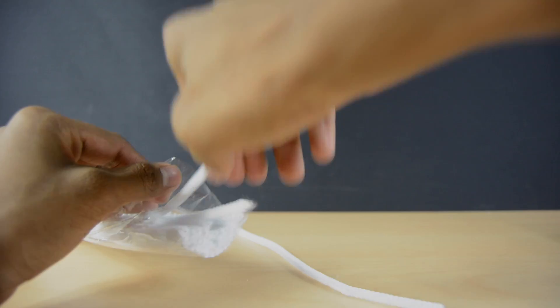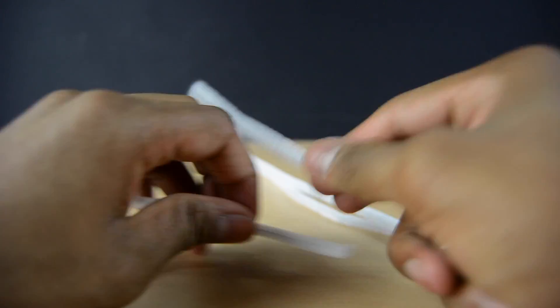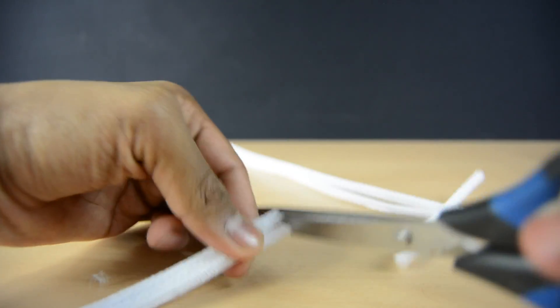Now to start off, go ahead and take out a couple pipe cleaners and cut it down to length. The length that you want is the diameter of the opening of the jar, which is extremely important. So cut out three identical pieces.